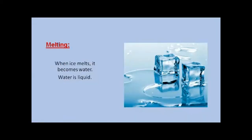Melting: when ice melts, it becomes water. Ice is solid. When the ice melts, it becomes water, and water is a liquid. So solid can change into a liquid. The process is called melting.